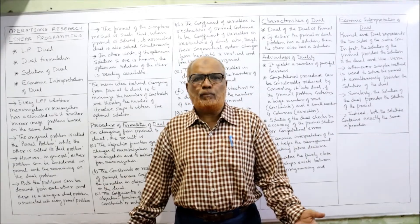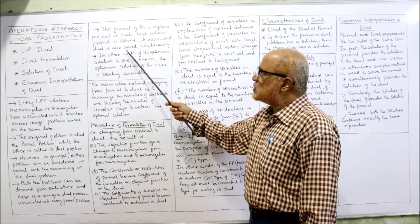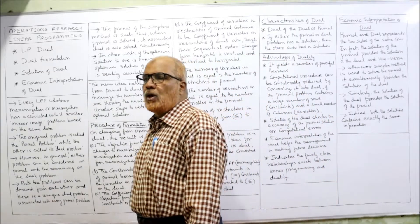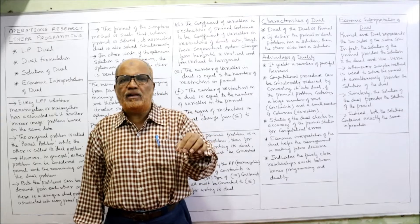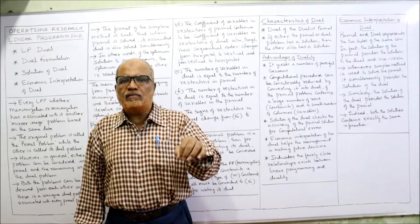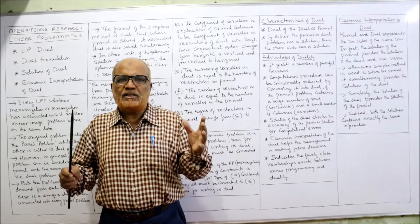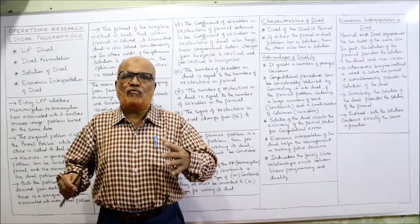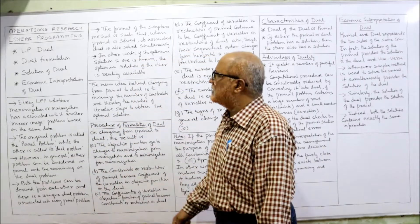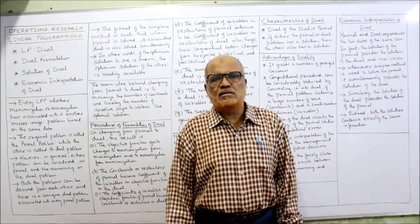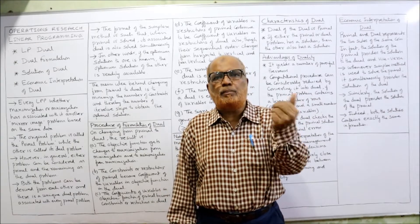The format of the simplex method is such that when the primal is solved, its associated dual is solved simultaneously. One speciality of the simplex method is that when we solve a primal problem, we automatically get the solution of the dual. If we solve the dual problem, we can automatically get the solution of the primal. The question will arise: why find this mirror image problem — why find the dual when we can solve the primal itself?